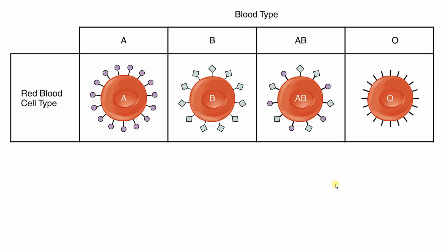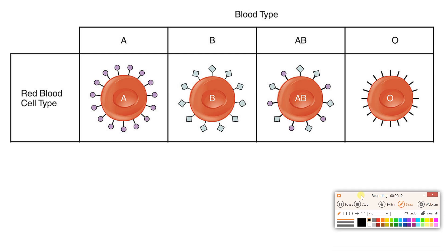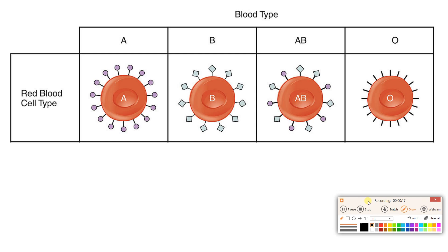This is number three for Bio2060. Today's lab is titled Selected Blood Tests. We're going to do a pair of blood tests: blood typing, that's the big one, and the hematocrit.